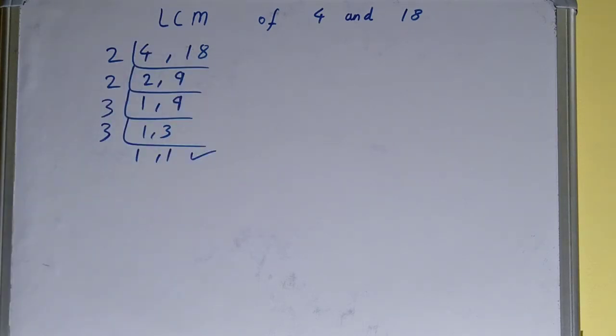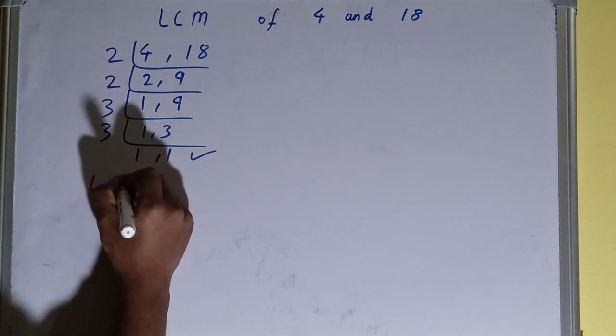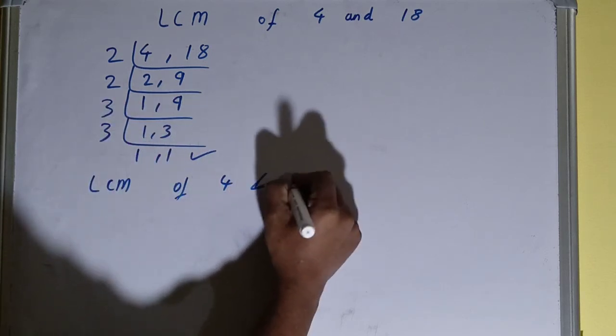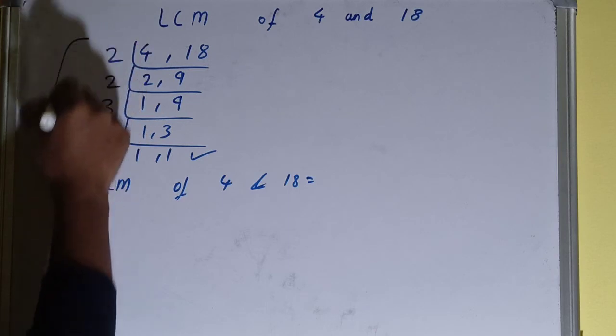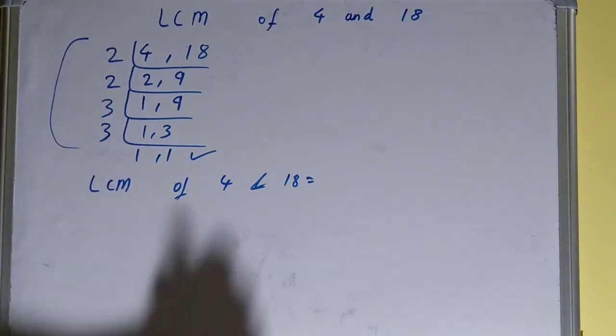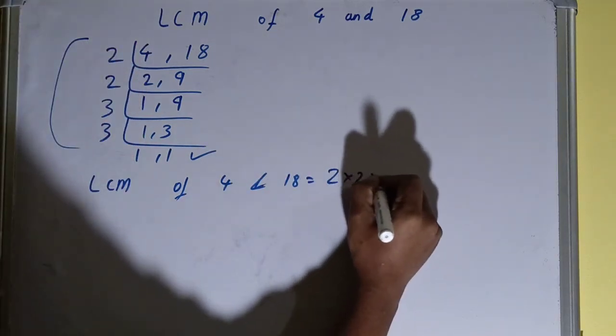Once you get 1 comma 1, you need to stop and do one last thing. That is, LCM of 4 and 18 equals multiply whatever you have on the left-hand side. That is 2 times 2 times 3 times 3.